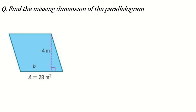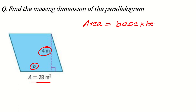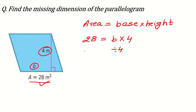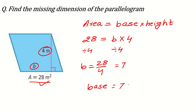They say here: find the missing dimension of the parallelogram. You can see the area is given, the base is not given, and the height is given. The formula is: Area = base × height. The value of area is 28, base is unknown (B), and height is 4. So 28 = B × 4. We divide both sides by 4: B = 28 ÷ 4 = 7. So the base is equal to 7 meters.